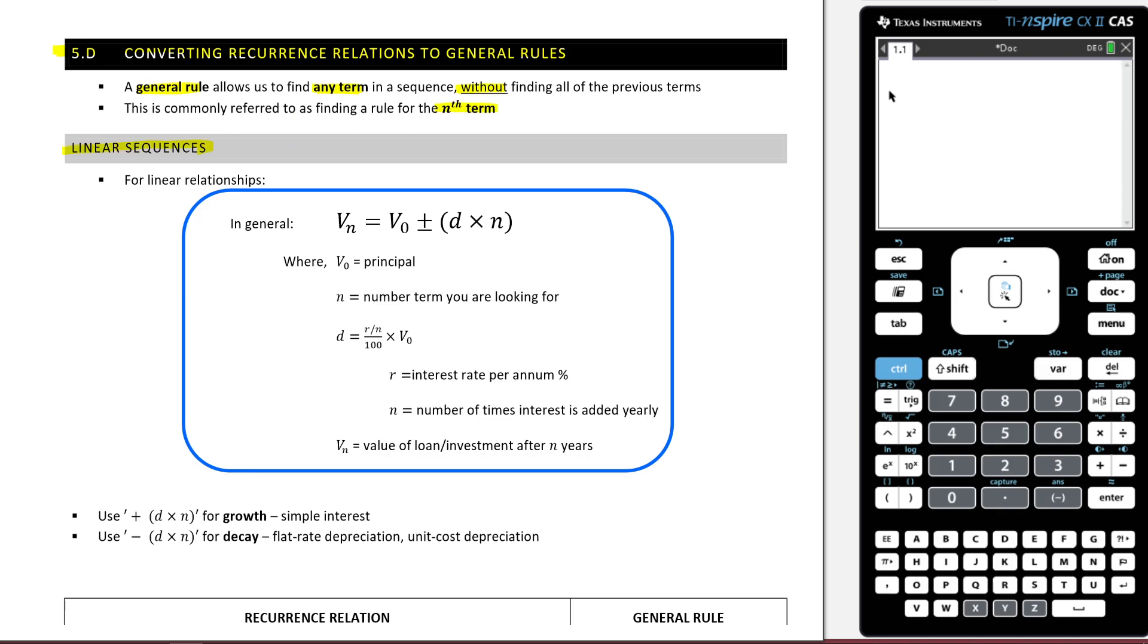So we're first going to talk about linear sequences. For linear relationships, we use this in general for our general rule. So this is what a general rule will look like. As you can see, this v_0 is our principal amount. This n here stands for the number term you're looking for. And this d is going to be specific to the question and we'll see what that's going to look like real soon. I think that once we go through some examples, this becomes really powerful to look back on to refresh your memory. But we really need to work through some examples in order for all of this talk about general rules make sense at all.